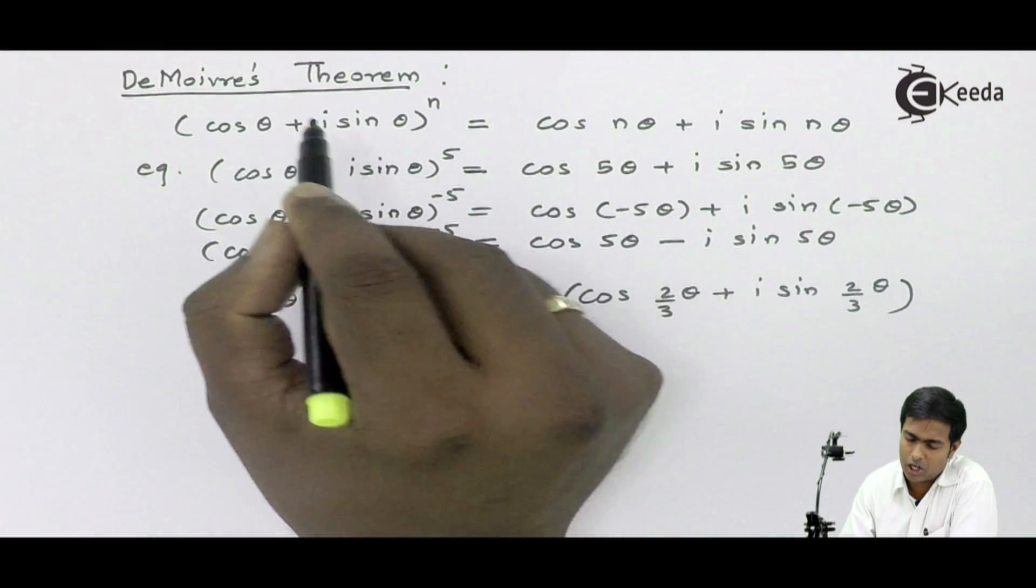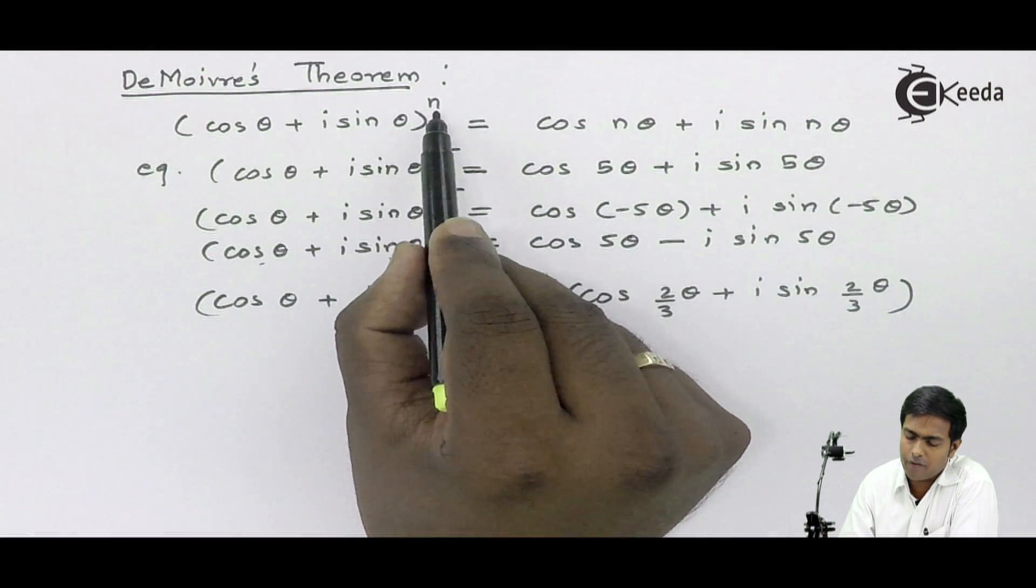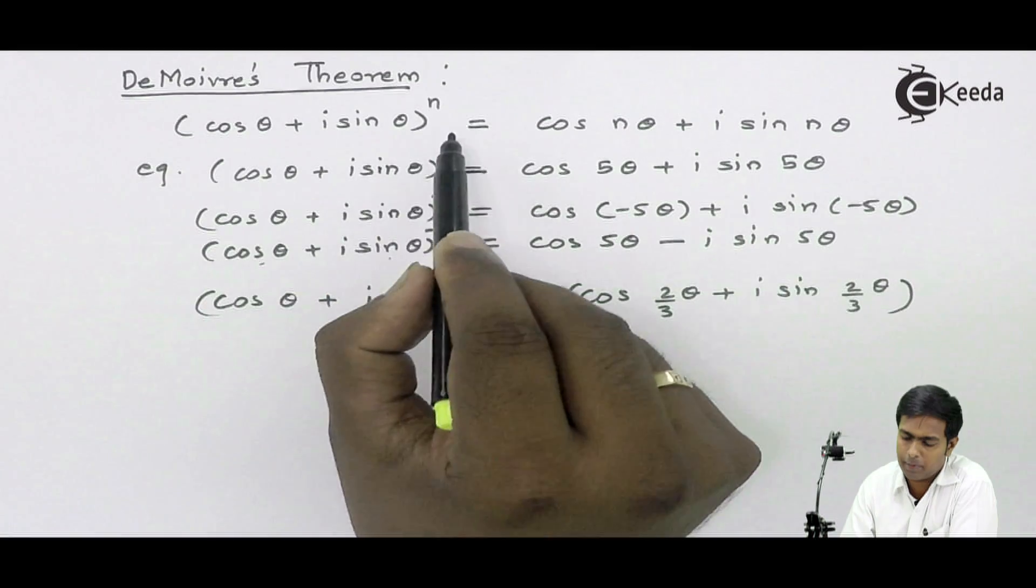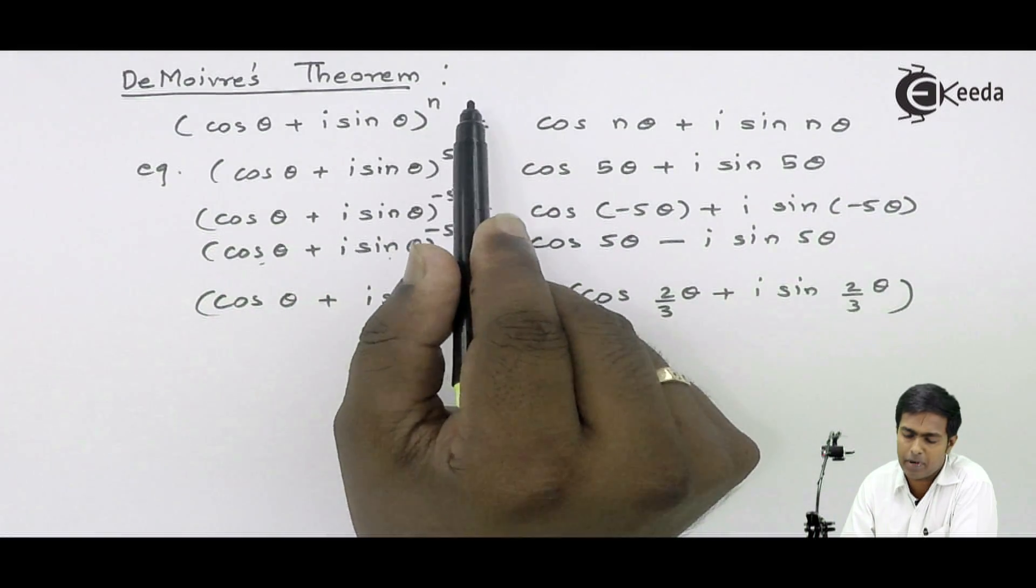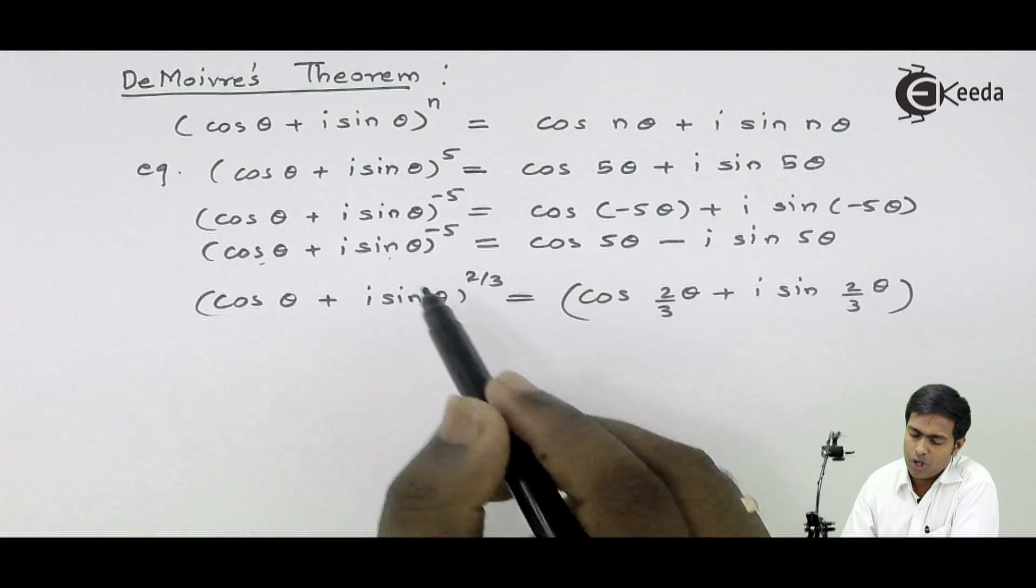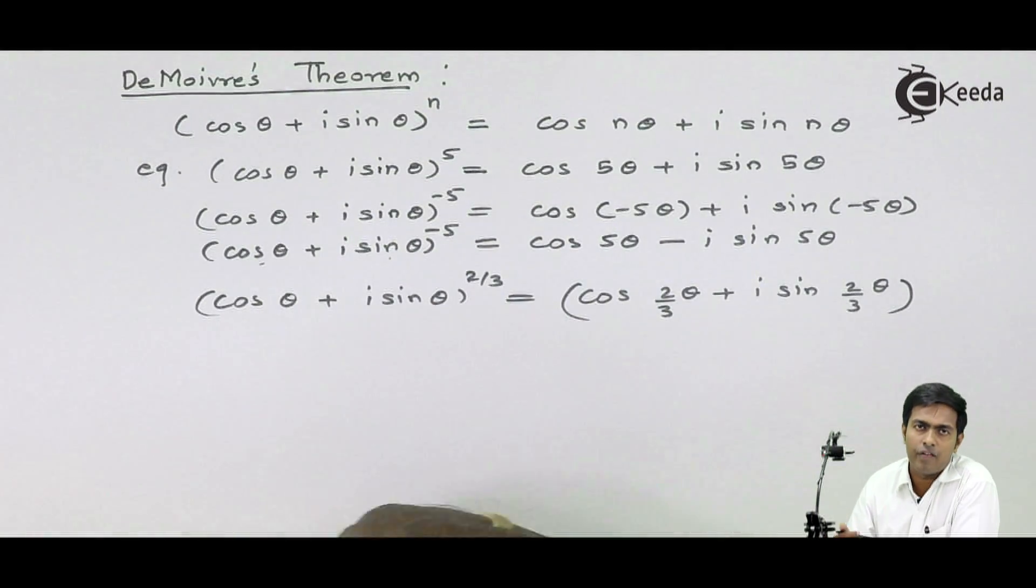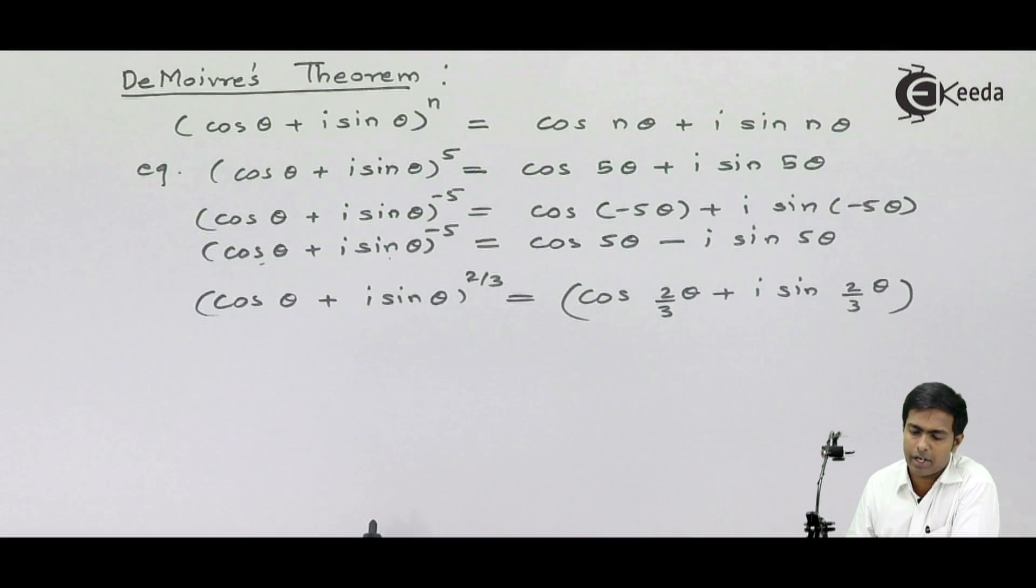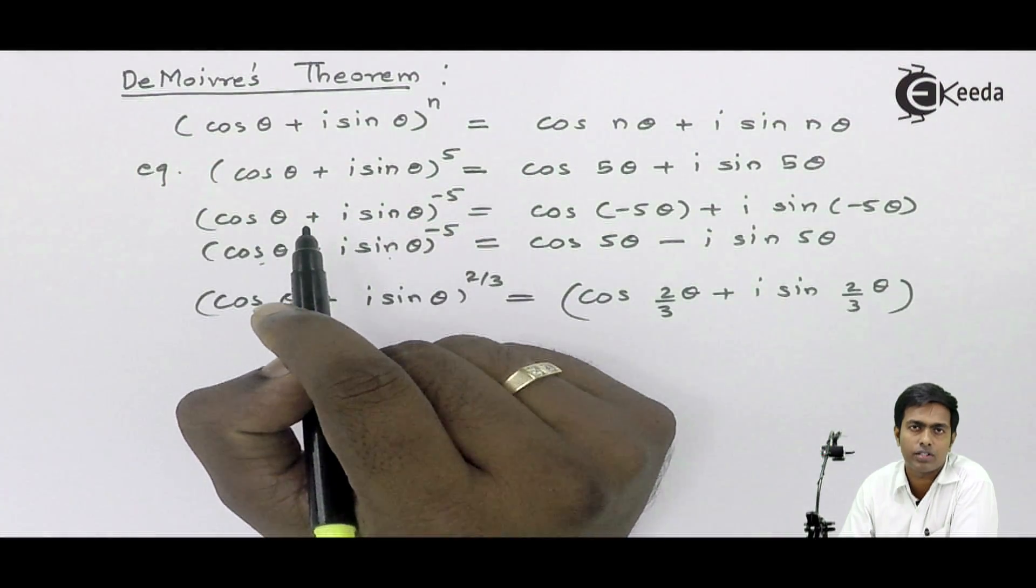According to De Moivre's theorem, whatever power or root you are finding for any complex number, that power or root will multiply the amplitude of the complex number. Using this theorem, we will see some numerical problems and solve them using the result of De Moivre's theorem.